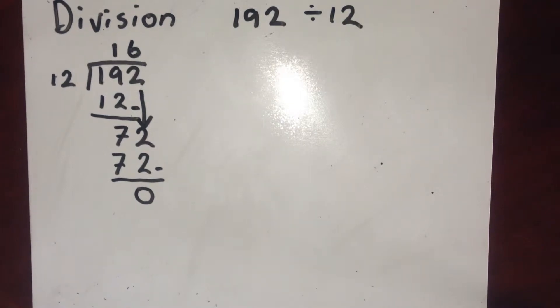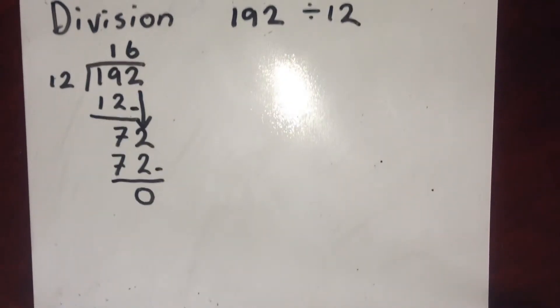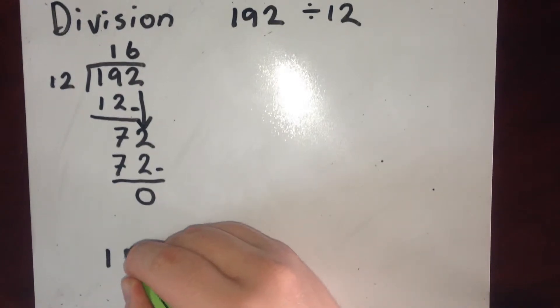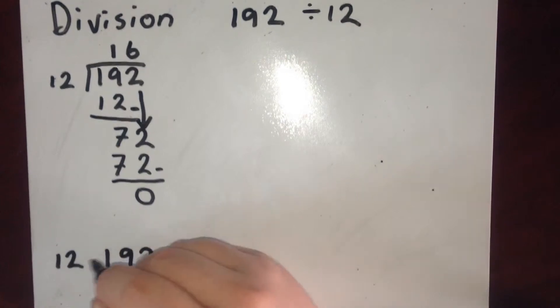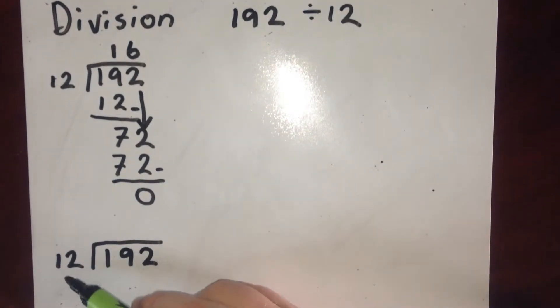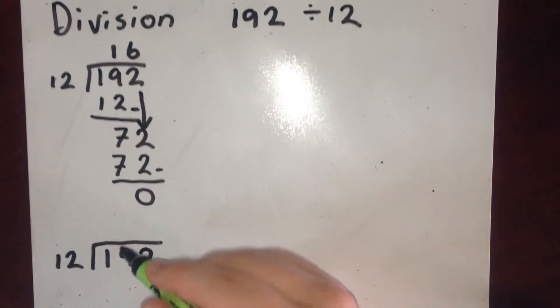If I did this same method using short division, it's very similar. So I'm still drawing my bus stop. But this time when I say how many 12s are in 19, there's 1.